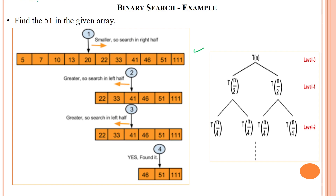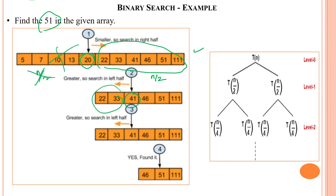Here is another example: searching for the value 51. The middle index value is 20, and since 51 is greater than 20, we ignore the left side and take the right side — this is n/2 considered. From the right half, the new middle index is 41. Since 51 is still not found, one more half is omitted (n/4 considered). The next middle element is 51, and the value is found.